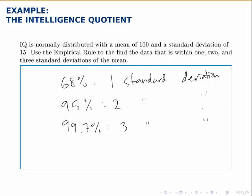In this case, with a mean of 100 and a standard deviation of 15, one standard deviation below will be 85 and one standard deviation above will be 115. 100 minus 15, 100 plus 15. So 68% of the data, in other words, 68% of people will have an IQ score between 85 and 115.